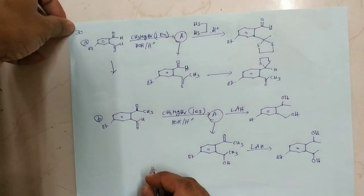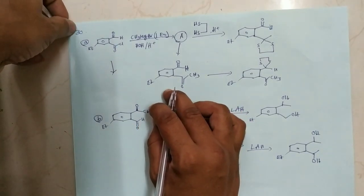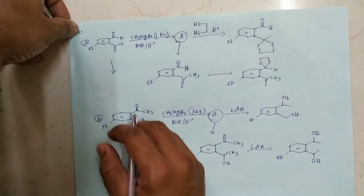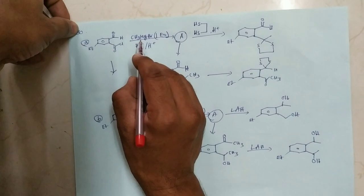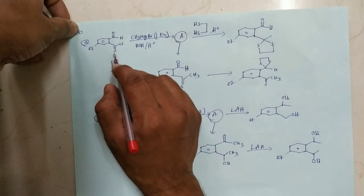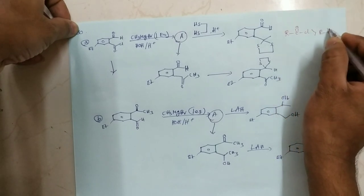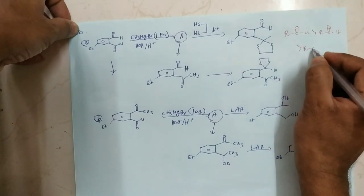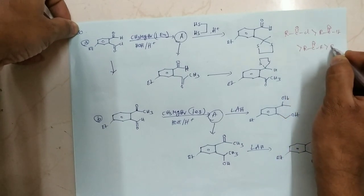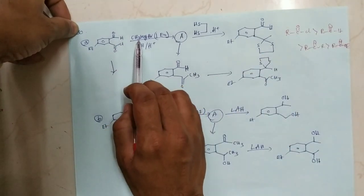Hello students. In yesterday's exam, question 30 asks: which of the following is correctly represented? Some reactions are given in four options. To identify the correct product, you must know the reactivity order: acyl halide is more reactive, then aldehyde, then ketones, and then the remaining acid derivatives. So between aldehyde and acyl halide, the acyl halide is more reactive.